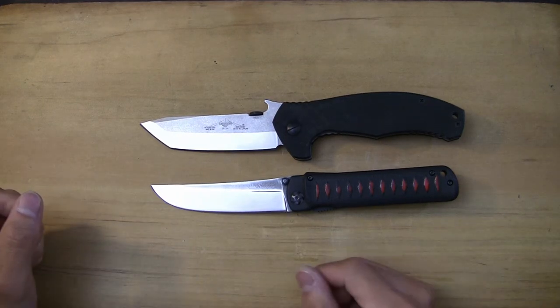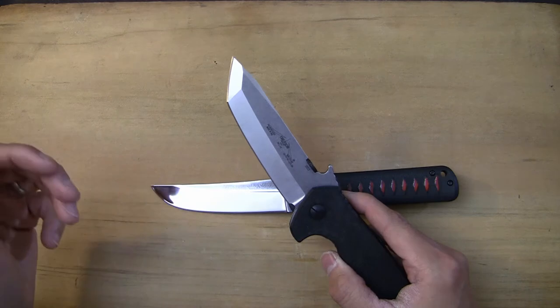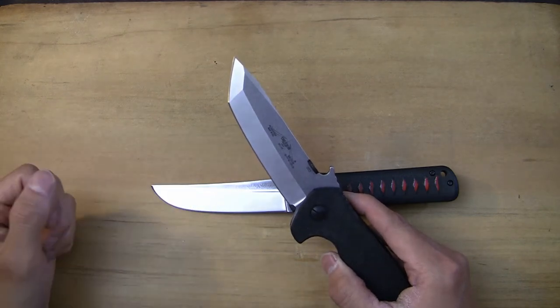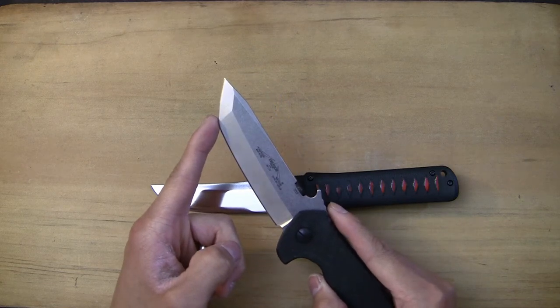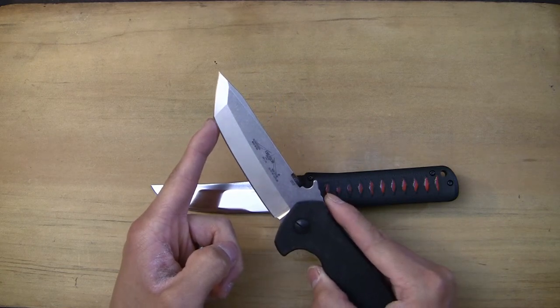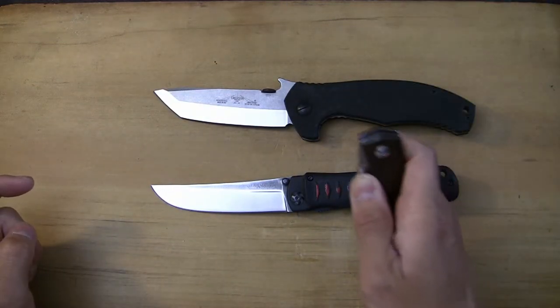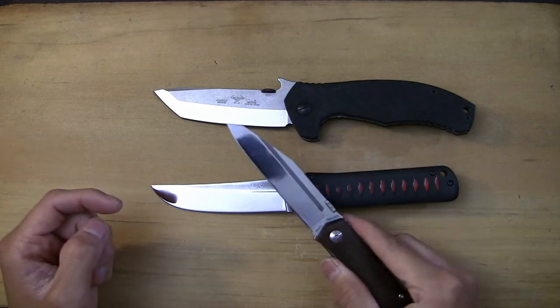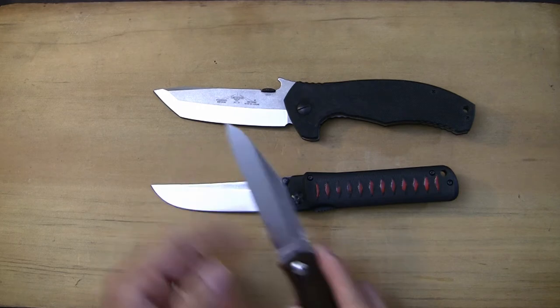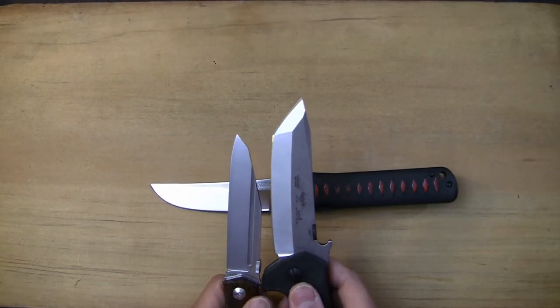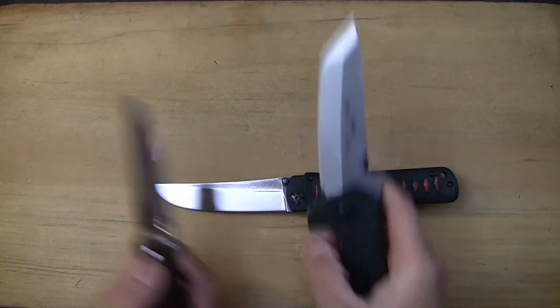So when you're opening boxes for example, with an American Tanto you can easily just put this point down. You angle the point into the box or whatever you're cutting and you can just pull it down. On more Warncliffe style blades or reverse Tantos, you don't really have to angle your knife down as much. With the American Tanto, you can actually use this point as if it was this point right here.